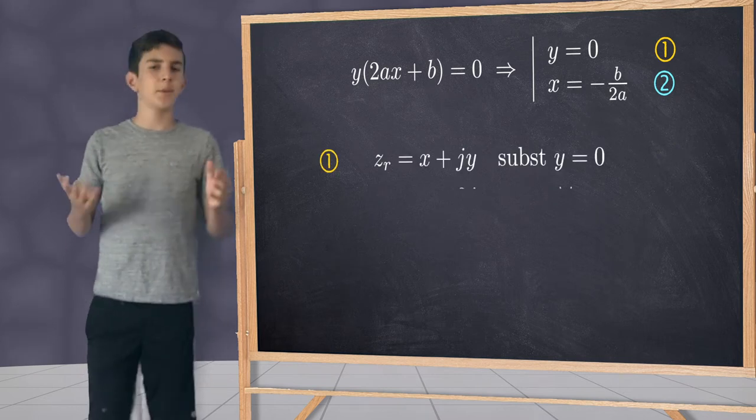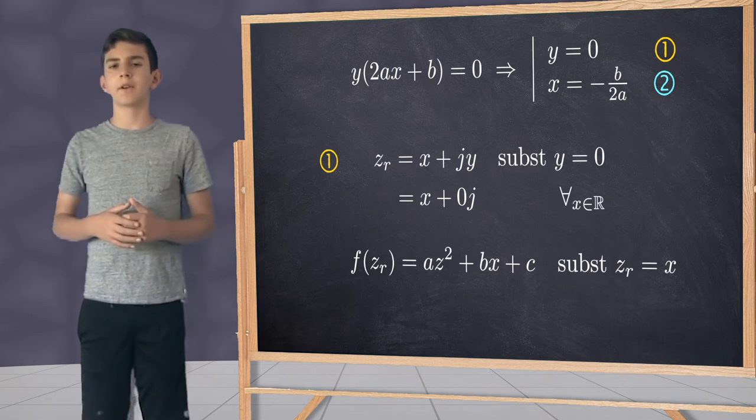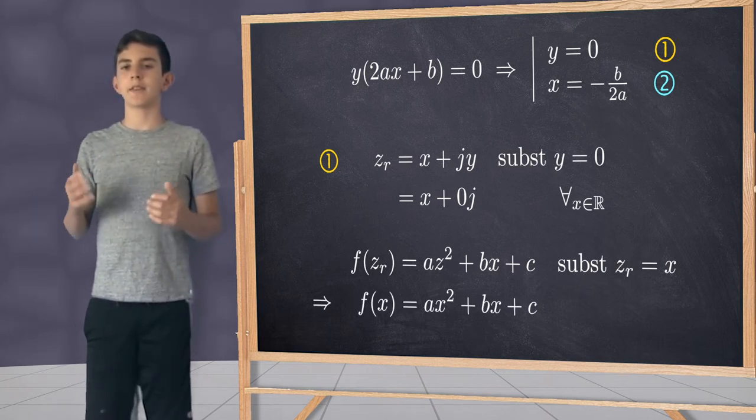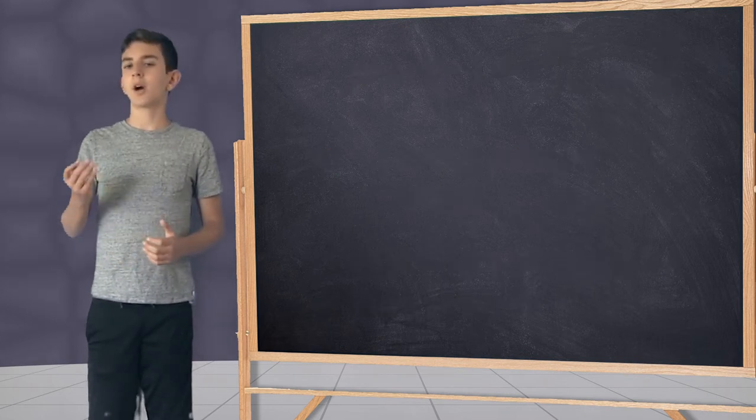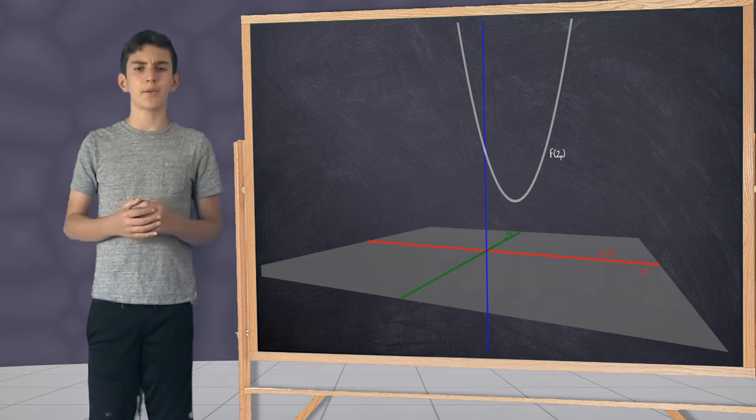For the first case, this implies that the input variable must be real. By substituting the variable zr back into the polynomial, we get the familiar polynomial expression. When we walk the values for the x axis, we get the same curve for the function value that we saw before.